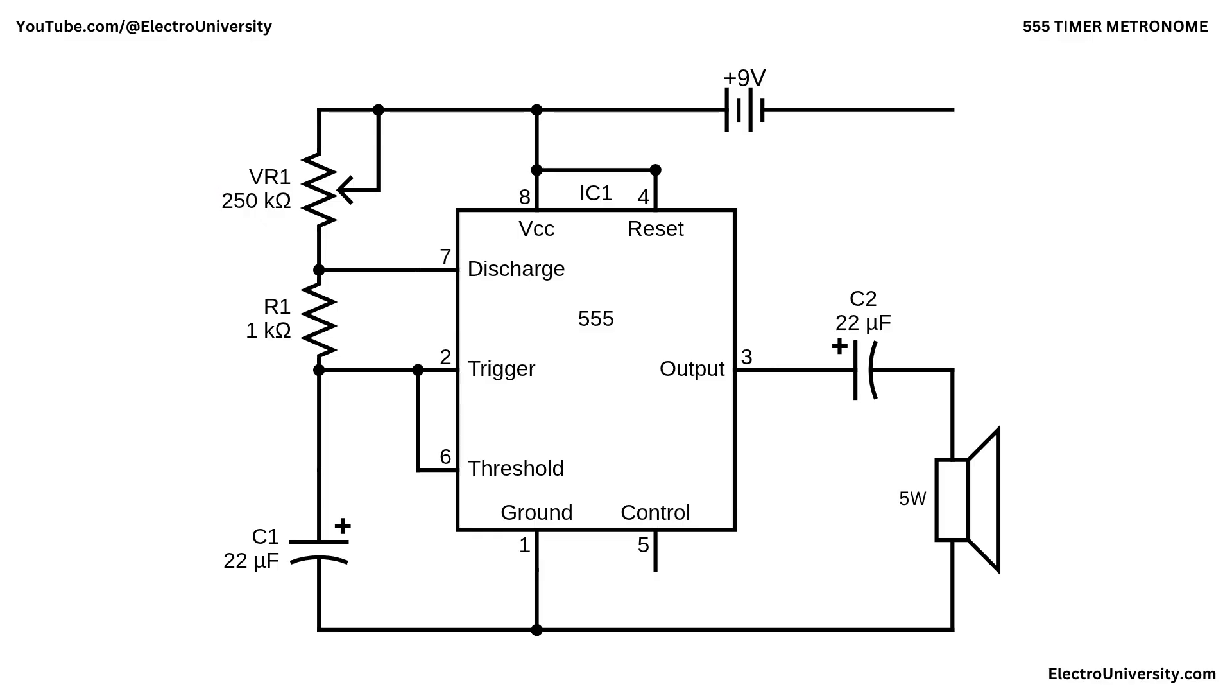The audible tick is created by coupling the 555's square wave output to the speaker through C2. C2 blocks DC, so the 5W speaker only receives brief current pulses at each output transition, which you hear as sharp clicks rather than a constant tone. The positive side of C2 is connected to the 555 output because the average DC level of the output sits around half the supply voltage, and the output pulses swing positive when the metronome produces each click. The speaker's return goes to ground, forming with C2 a simple high-pass path that emphasizes the attack of each beat.